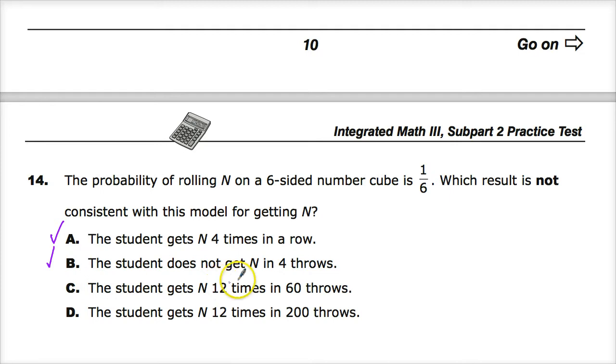The student gets N 12 times in 60 throws. Well, it's a good idea here for me to do an analysis of this fraction and see what it reduces down to. Now, anybody can reduce a fraction. I mean, six goes into both, two over ten. But the calculator will do it, too. If you have a TI-84 Plus with some of the newer software on it, if you hit alpha and y equals, or you could just do 12 divided by 60.